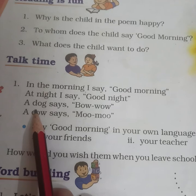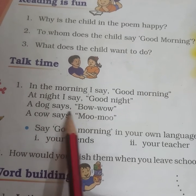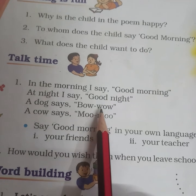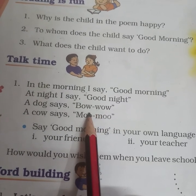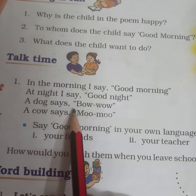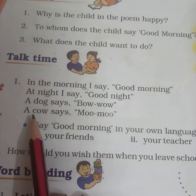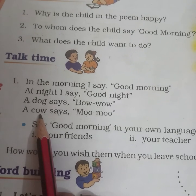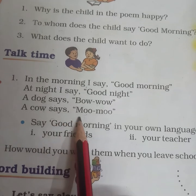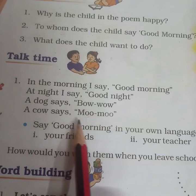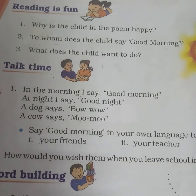A dog — 'dog' means 'kutta' — says 'woof'. A dog says 'woof'. A cow — 'cow' means 'gaay' — says 'moo'. And the cow says 'moo'.